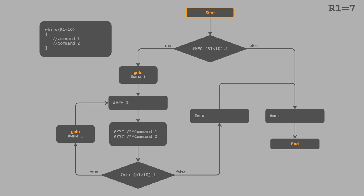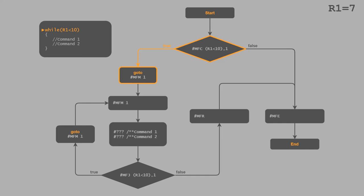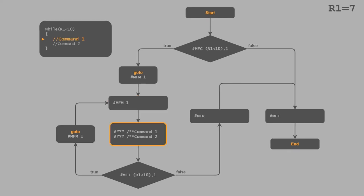Let's go through the diagram step by step. We assume register R1 has a value of 7. For checking the condition we use the command MFC at the beginning. It generally does the same as the MFJ command, but the difference is that you can also jump back again — we will use this later. Register R1 is 7 and the condition that the value should be smaller than 10 is fulfilled, so we jump to the marker with ID 1 and execute the loop.